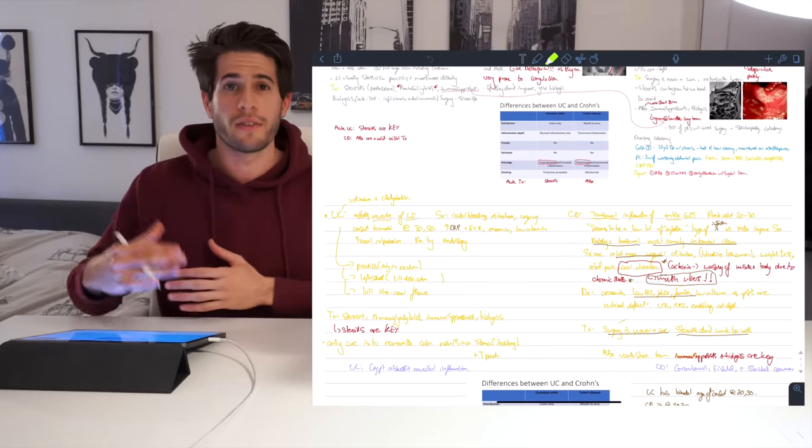So for example, all of these lecture notes that you see up here has been condensed into just these few yellow notes over here. And that's sort of the most important, most high yield information that I can look at at a glance.